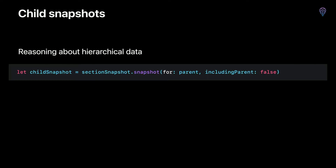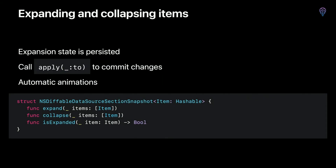Section snapshots are capable of representing hierarchical data. At times it's convenient to reason about just a portion of this hierarchy. In this code snippet, we retrieve all the children related to a particular parent item, optionally including the parent itself, as a resultant section snapshot.